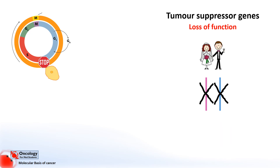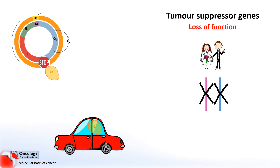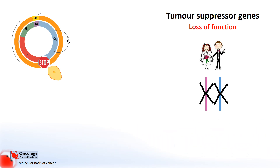Often people talk about tumour suppressor genes being like the brakes of a car. They halt the car and stop it from moving on. If the brakes get damaged, however, the car can't stop — as we'll see in our next example.